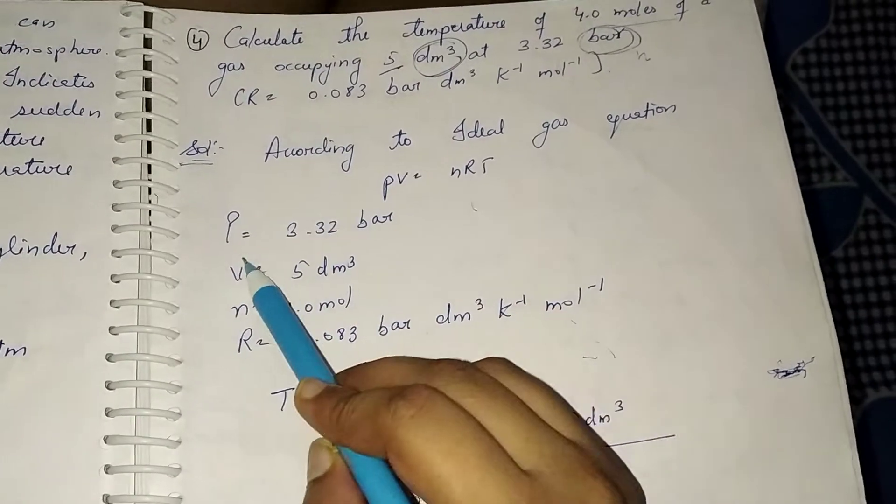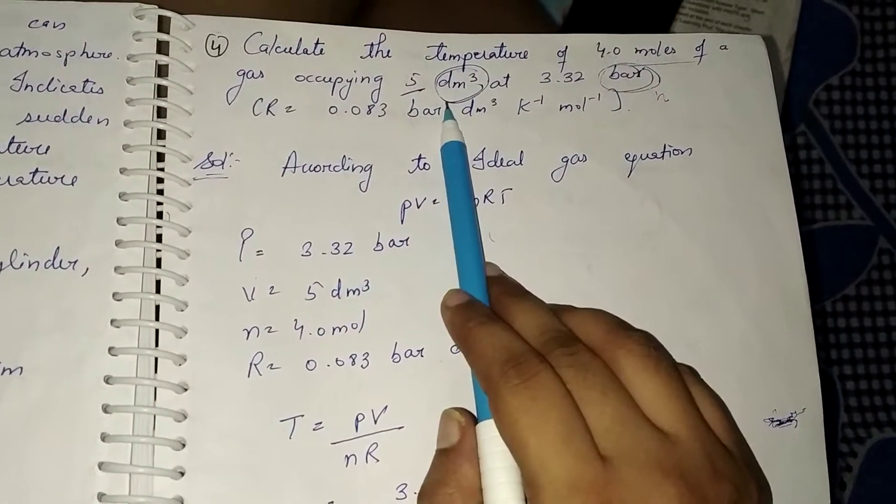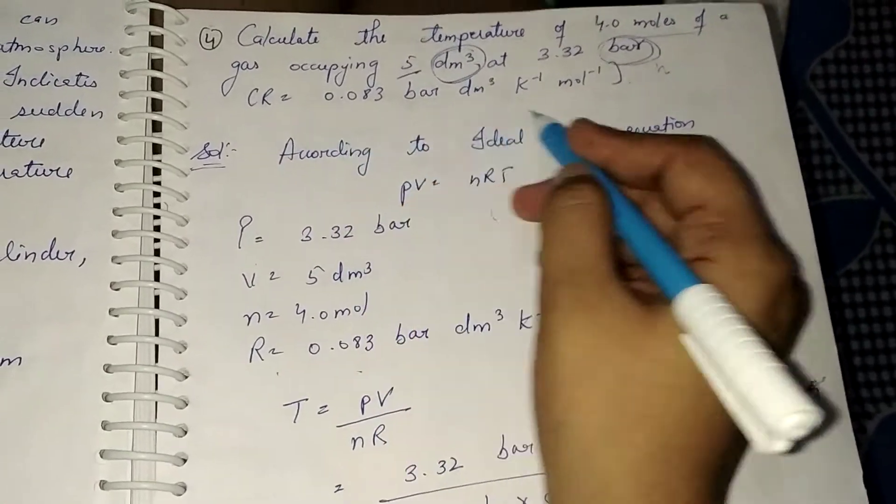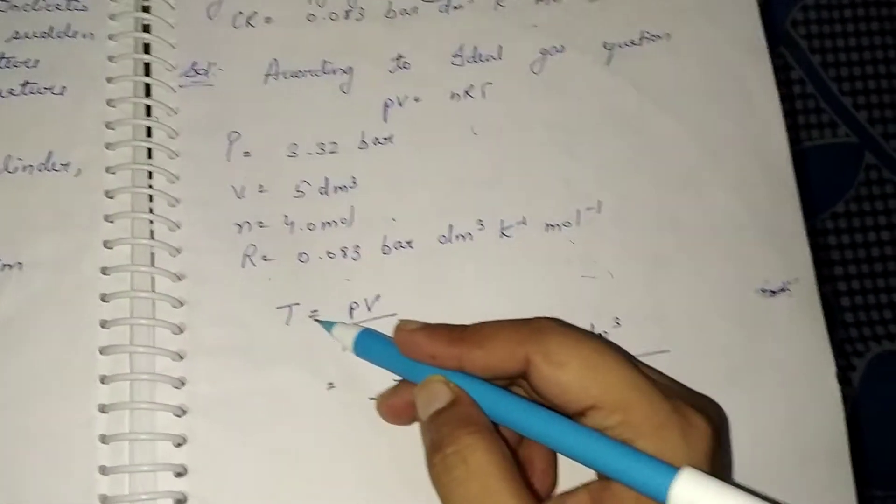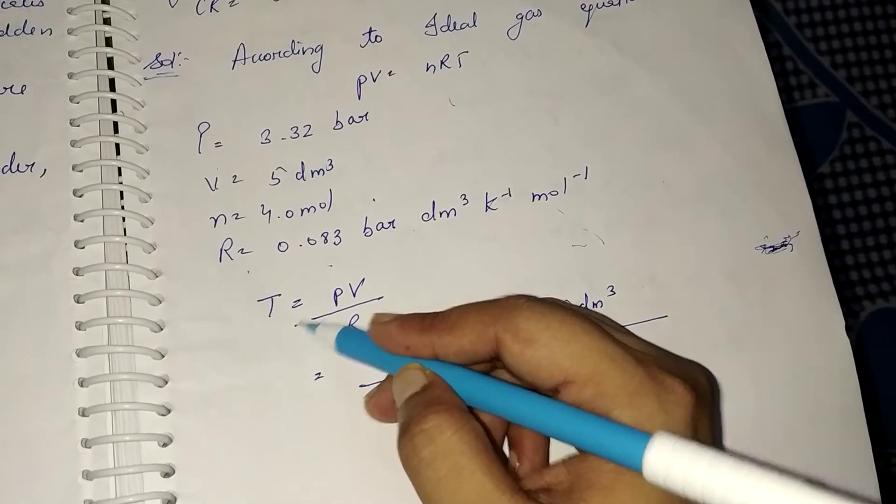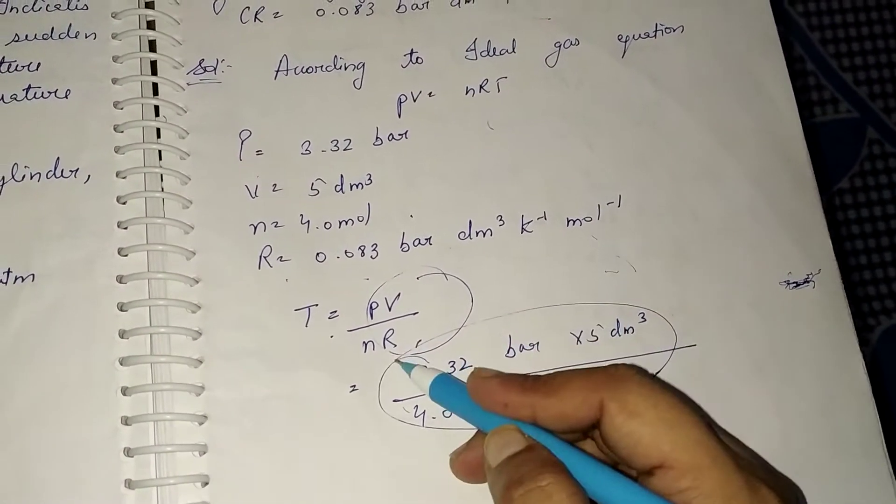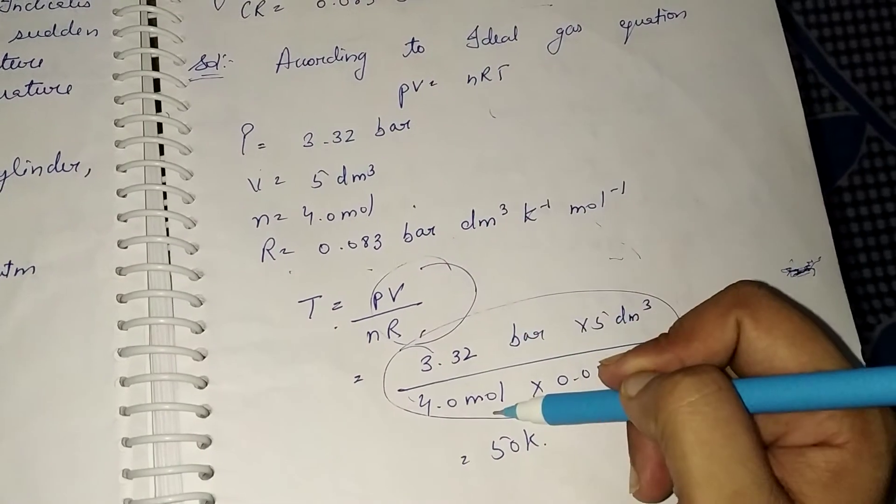The terms given are: P is given, V is given, and n is given. T needs to be found out, and R value is already given. So put the values - temperature on the left hand side, and all the other terms on the right hand side. By applying these values...